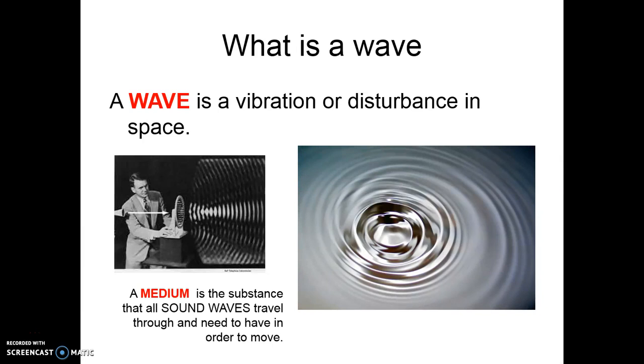So a wave, that's just a vibration or some disturbance in space. In order for any kind of wave to happen, whether it's a sound wave, a light wave, anything, any of those different types of waves to happen, a physical wave, we need some kind of substance for that wave to travel through, which we just call our medium.